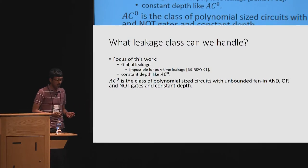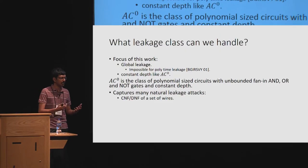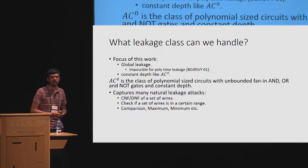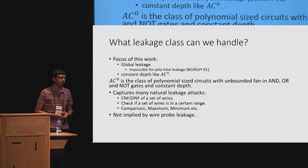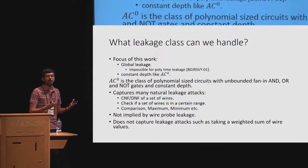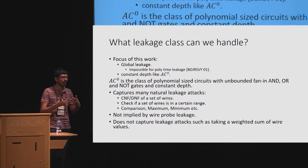Why is this restriction interesting? AC0 already captures many natural leakage attacks. For example, AC0 can compute a CNF or a DNF of a set of wires, check if a set of wires is in a certain range, perform comparisons, and compute the maximum or minimum of a set of values. So AC0 is already a rich class of leakage functions. Interestingly, it is not implied by the weaker notion of wire probe leakage, showing that AC0 is strictly stronger than the wire probe leakage model. However, AC0 does have limitations — it does not capture certain leakage attacks, such as taking a weighted sum of wire values.